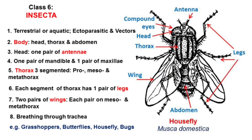Class 6 is Insecta. Animals belonging to Insecta are terrestrial or aquatic, and some are ectoparasitic and vectors of diseases. The body is divided into head, thorax, and abdomen. The head has one pair of antennae, one pair of mandibles, and one pair of maxillae. The thorax is divided into three segments — prothorax, mesothorax, and metathorax — each having one pair of legs, giving three pairs of legs in total. Because insects are aerial, they have two pairs of wings, each pair present on the mesothorax and metathorax. Breathing occurs through trachea.